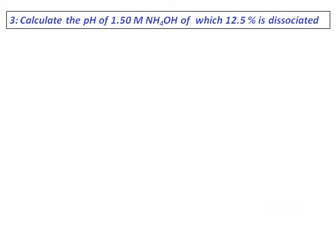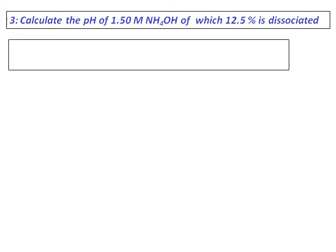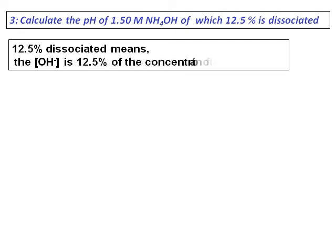Calculate the pH of a 1.50 molar ammonium hydroxide of which 12.5% is dissociated. So, how do we do this? With 12.5% dissociated means, the concentration of hydroxide ion is 12.5% of the concentration of the base.